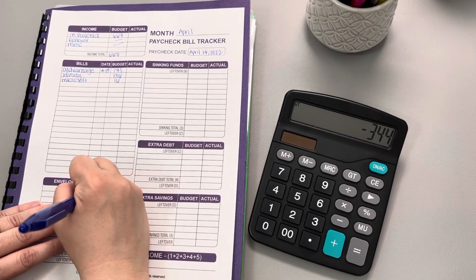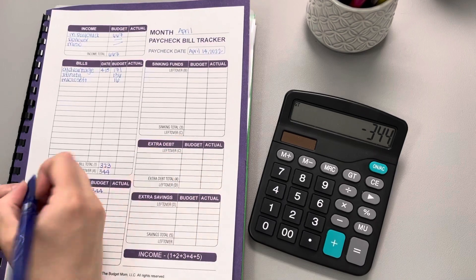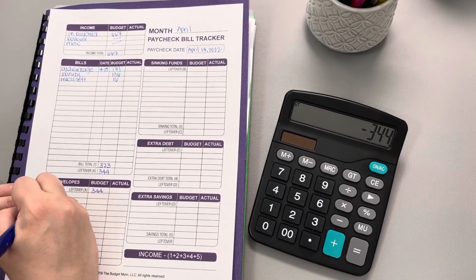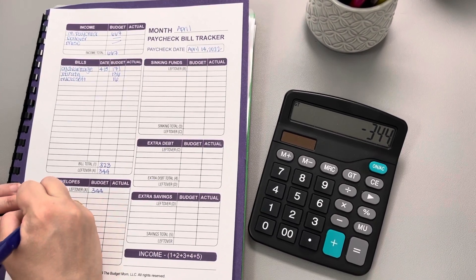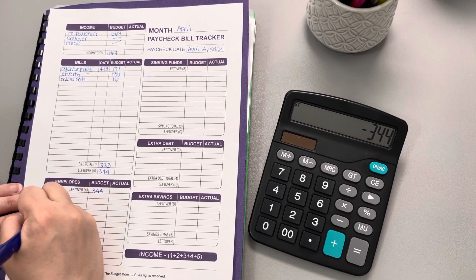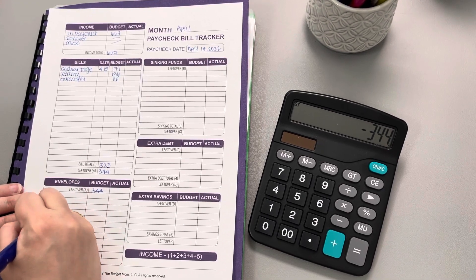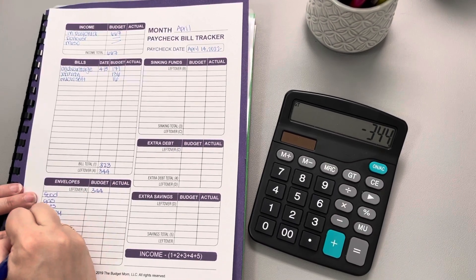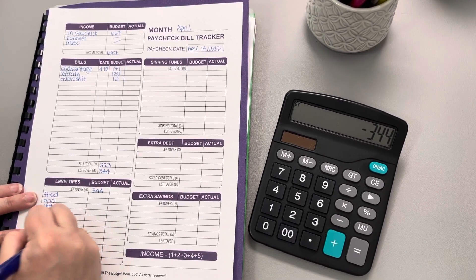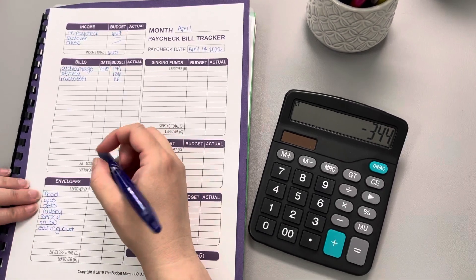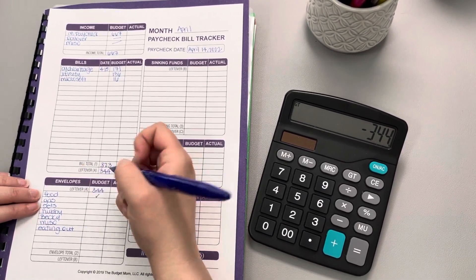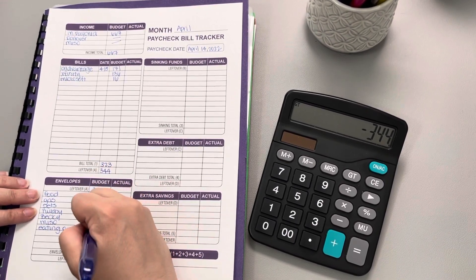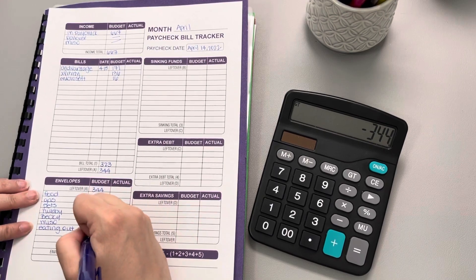Now when we bring this down, I'll go ahead and write out our envelopes: food, hubby, gas, pets, personal, miscellaneous and eating out. Now, food for the month has already been met. Hubby has been met. Miscellaneous has been met and so has eating out.